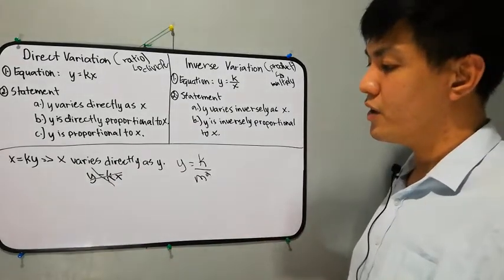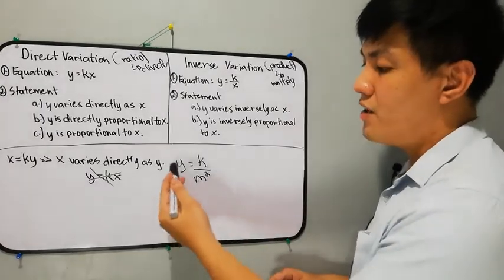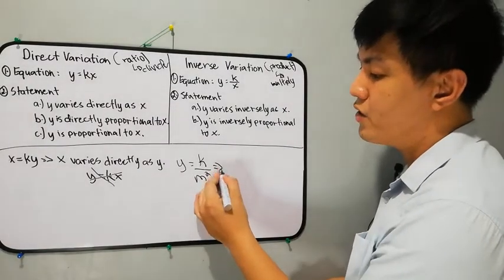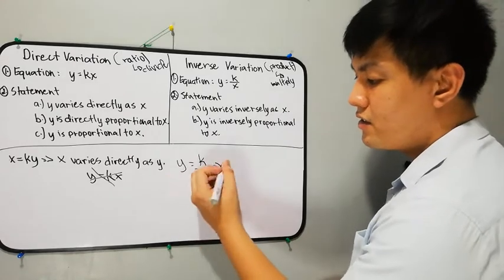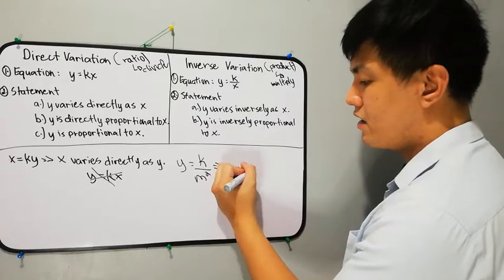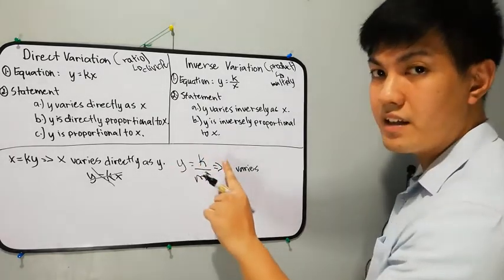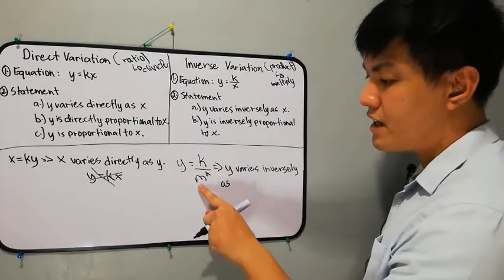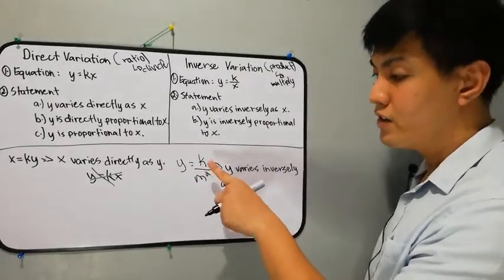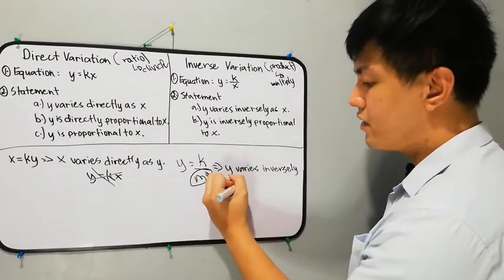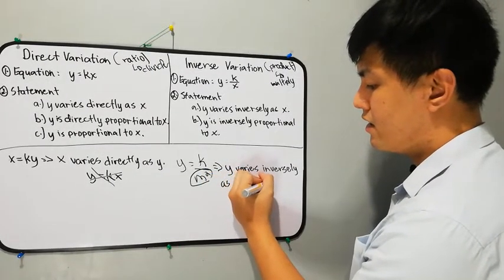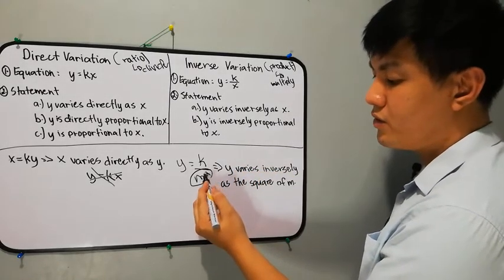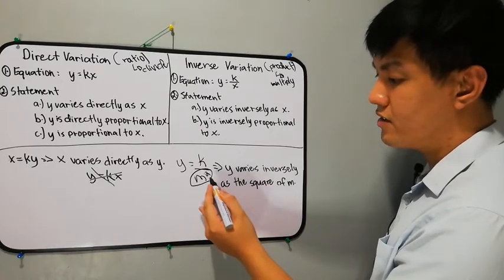Since the equation y equals k over m squared is an inverse variation, we use the word 'inversely.' Because y comes first, the statement is: 'y varies inversely as the square of m.' The exponent tells us to read m squared as 'the square of m.' That is how we translate from equation to statement.